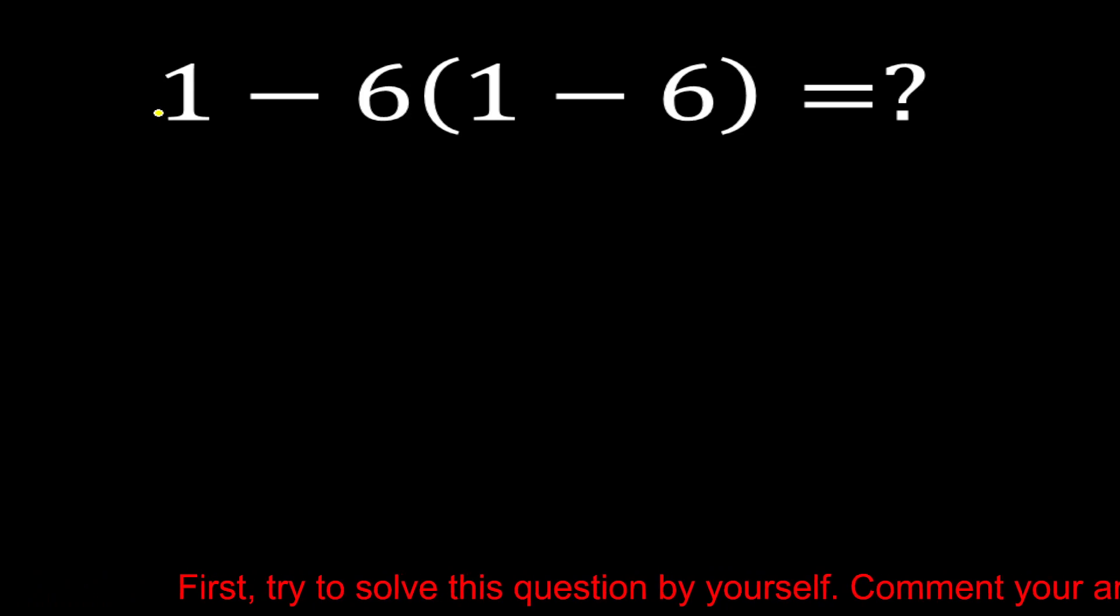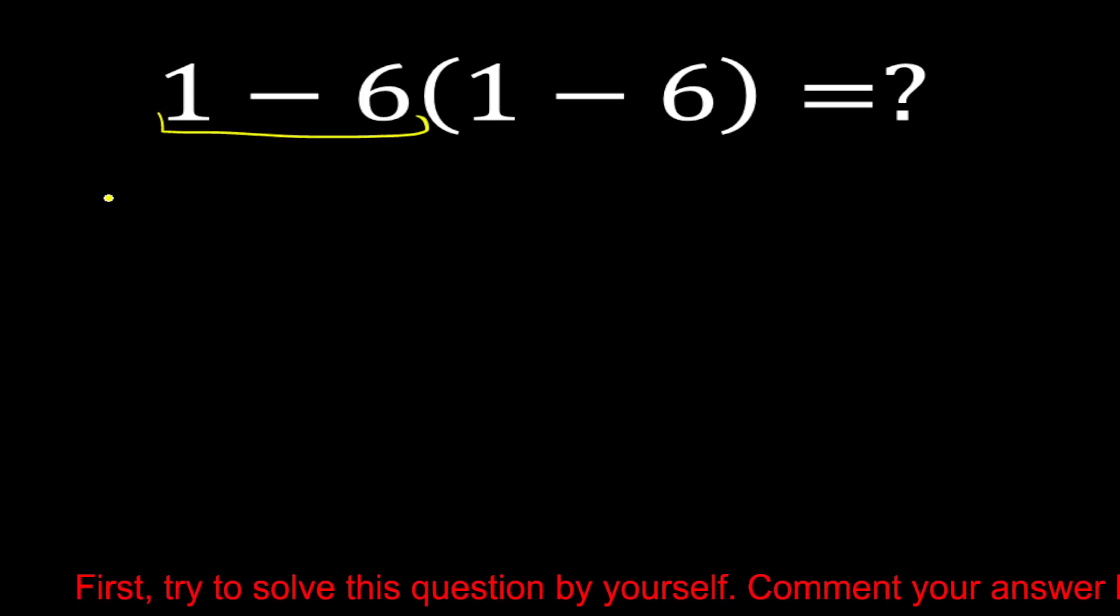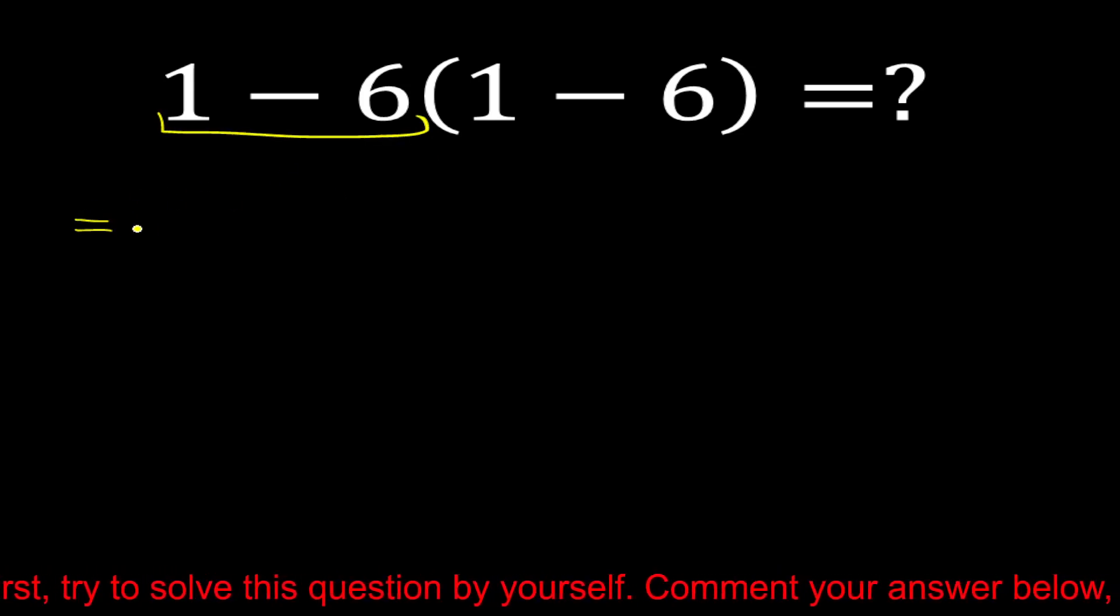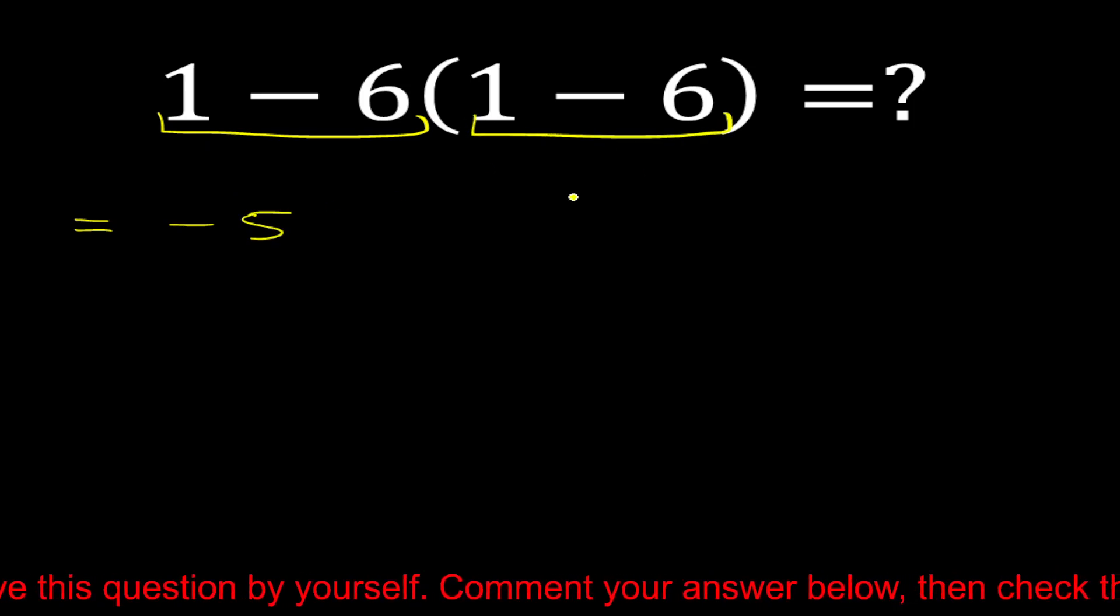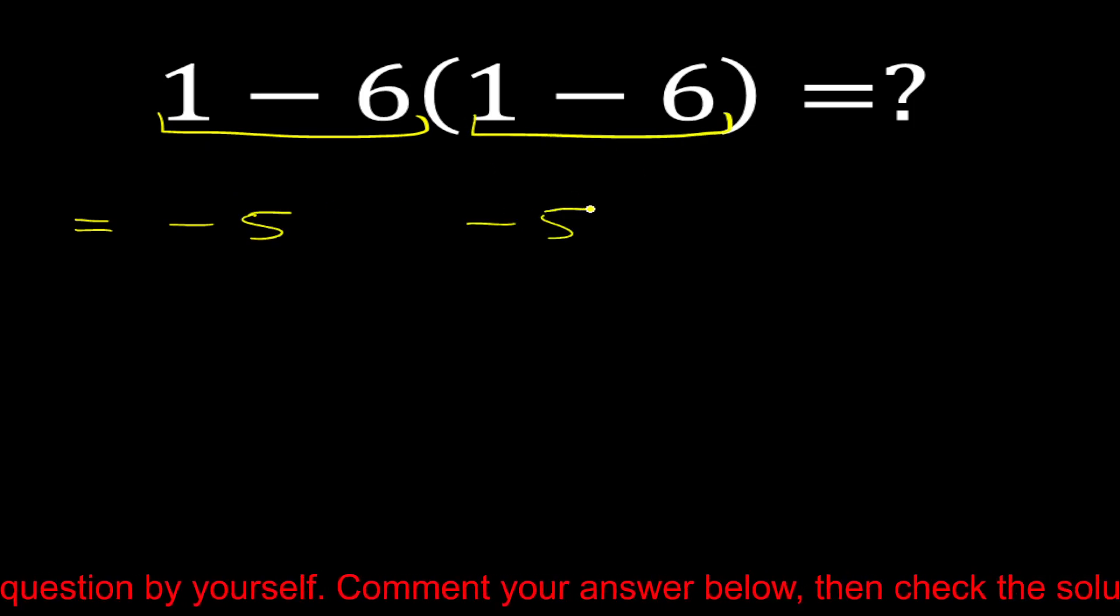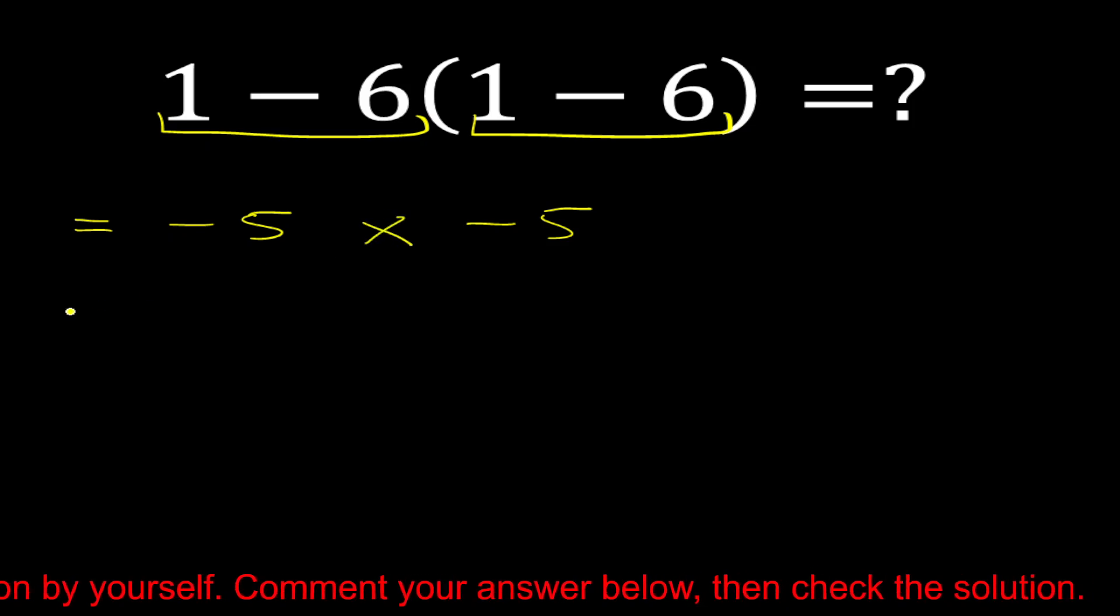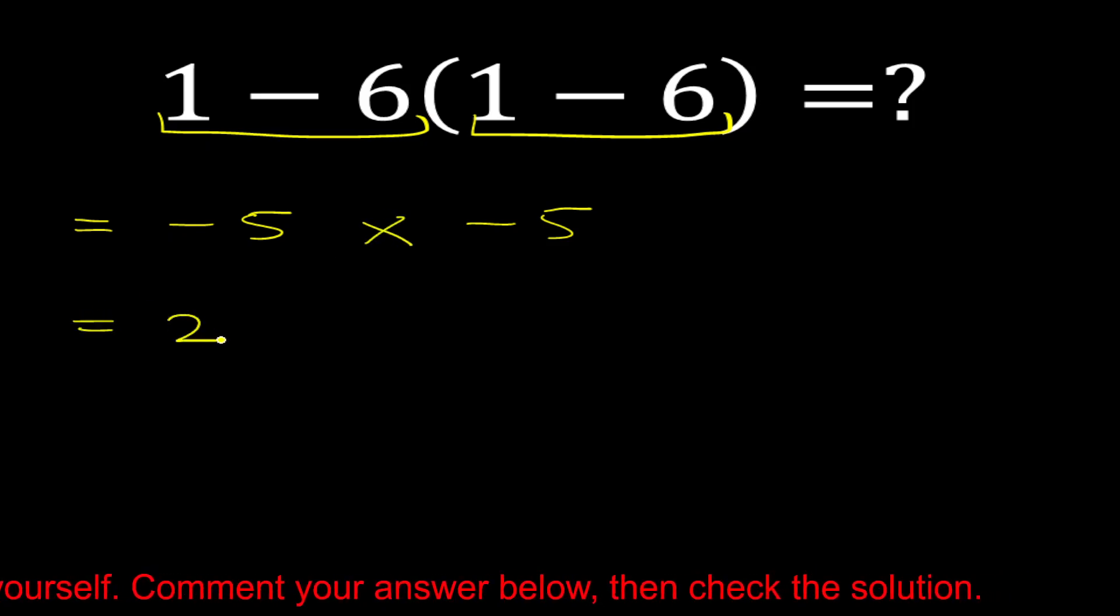So most people solve this question like 1 minus 5. Sorry, 1 minus 6 is equal to minus 5. Then again 1 minus 6 is equal to also minus 5. Now minus 5 multiply minus 5 is equal to 25.